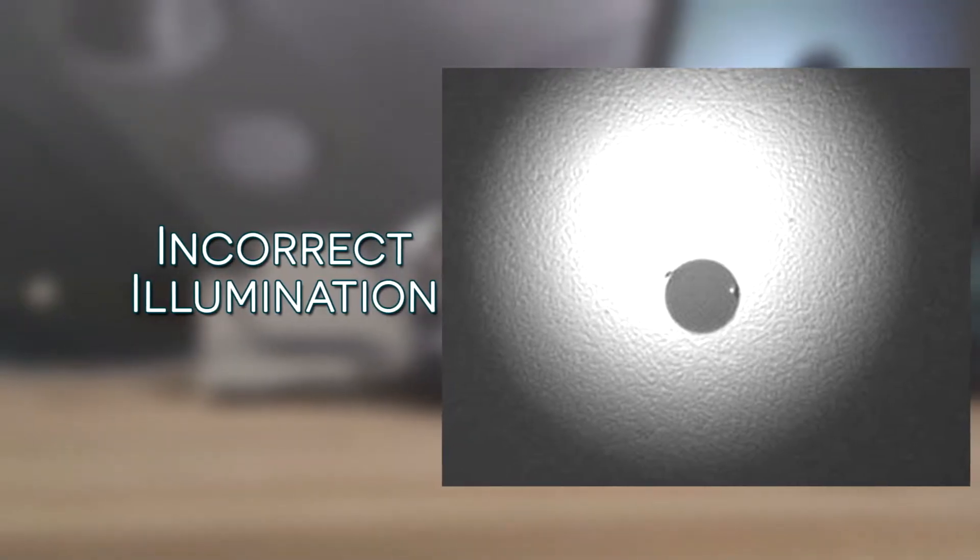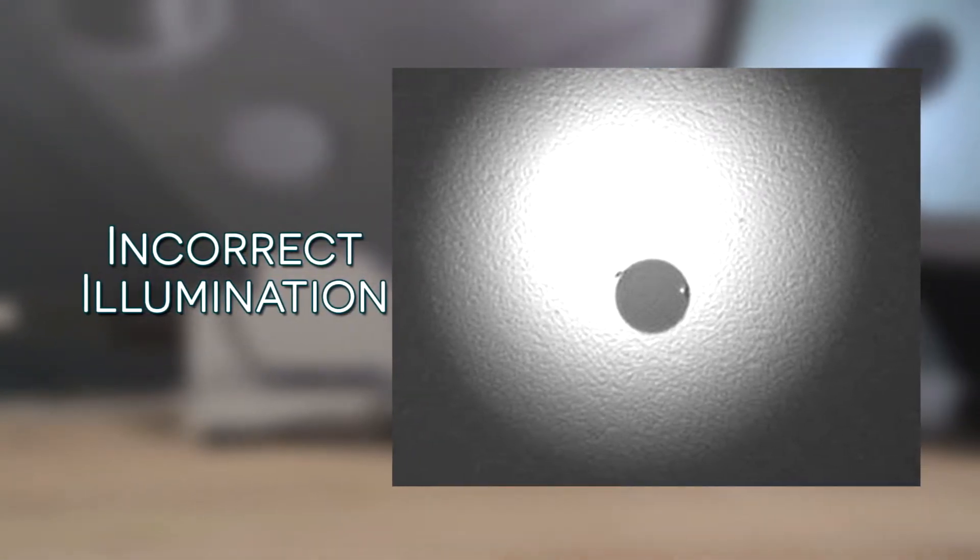Incorrect illumination: Notice how the light is towards the top of the screen. Correct illumination: Notice how the light surrounds the fiber. Light scratches can now be easily detected.